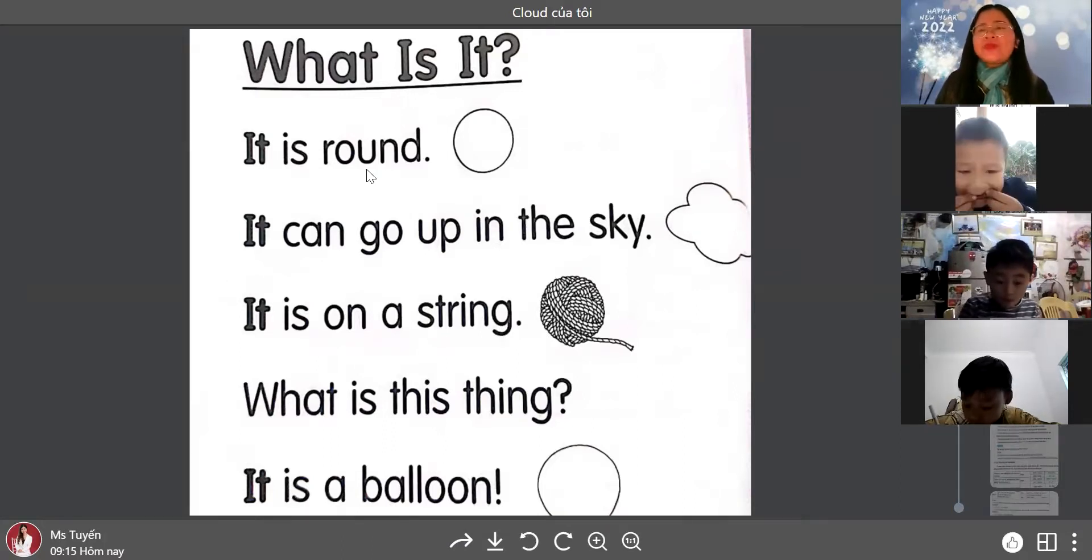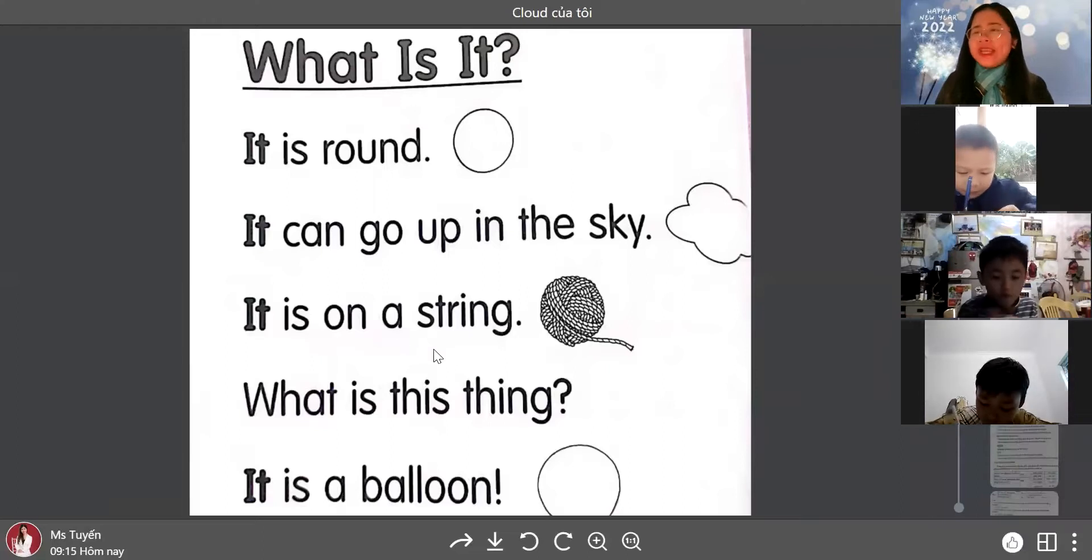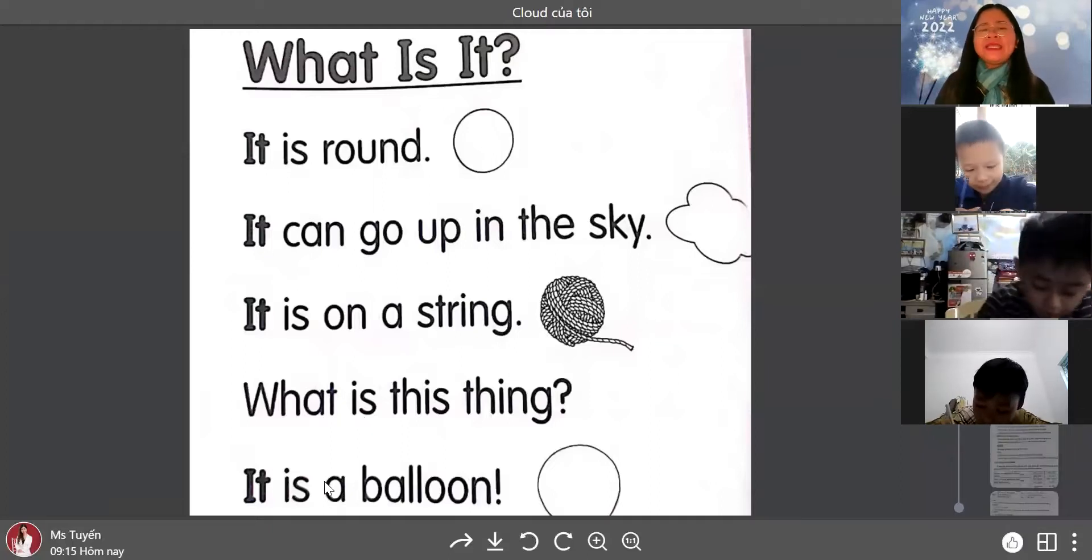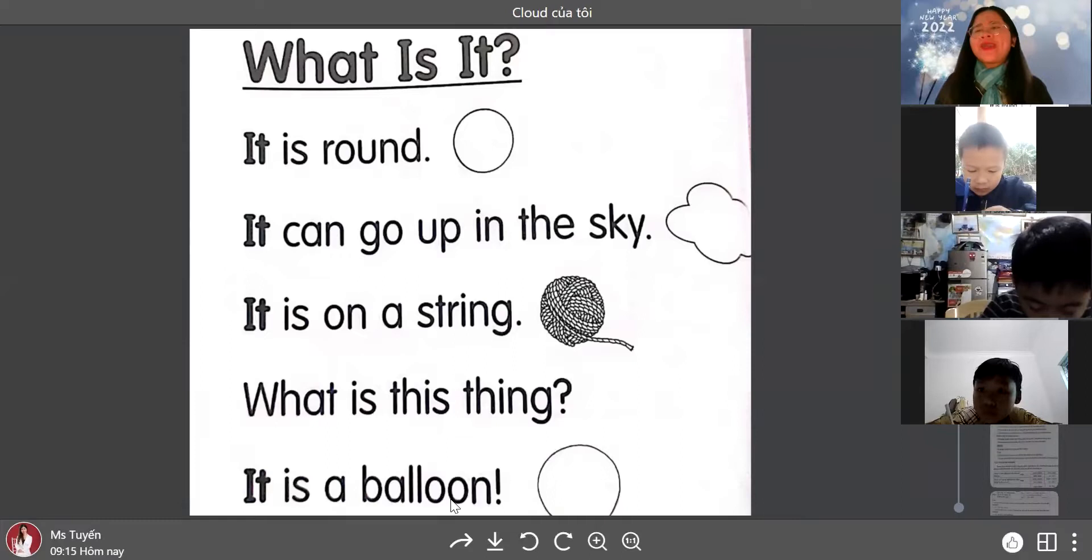It is round. It can go up in the sky. It is on a string. What is this thing? It is a balloon. It is a balloon. Okay.